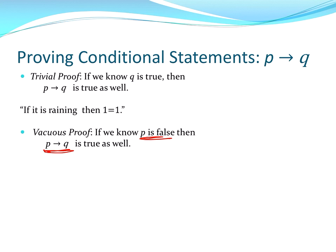And here's an example. If I am both rich and poor, which is impossible, if I am both rich and poor, then 2 plus 2 equals 5. That's a true statement, because the hypothesis is false.